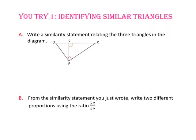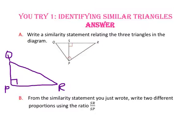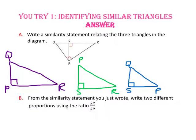Pause the video and do you try number 1. For part A, we write a similarity statement relating the three triangles in the diagram. Let's redraw the triangles oriented the same way: the large triangle Q, P, R; then the medium triangle P, S, R; and the small triangle Q, S, P. Using our newly positioned triangles: triangle Q, P, R is similar to triangle P, S, R, which is similar to triangle Q, S, P.